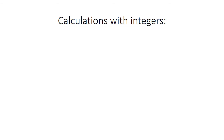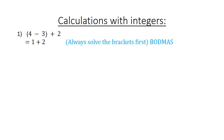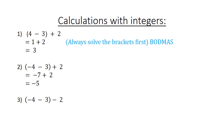Calculations with integers. 4 minus 3 plus 2 equals — always solve the brackets first — 1 plus 2 equals 3. Negative 4 minus 3 plus 2 equals: negative 7 plus 2 equals negative 5. Negative 4 minus 3 minus 2 — first solve the brackets — negative 7 minus 2 equals negative 9.